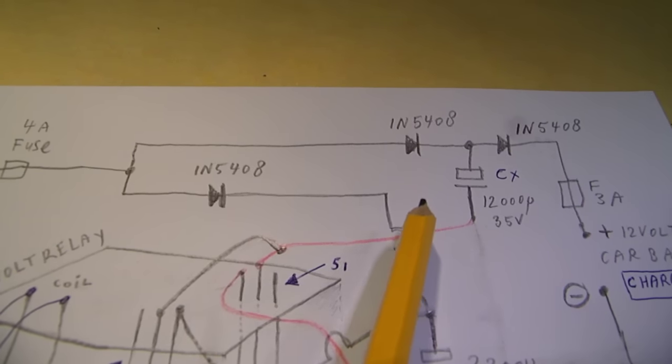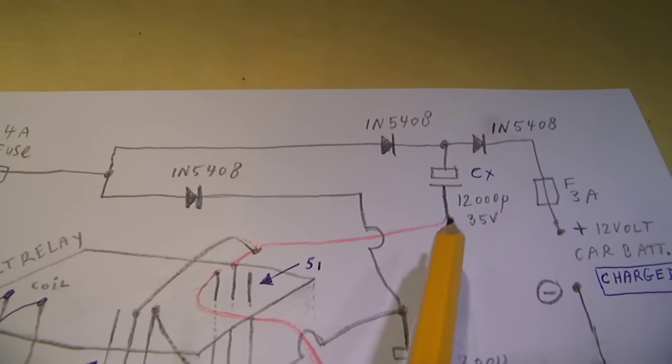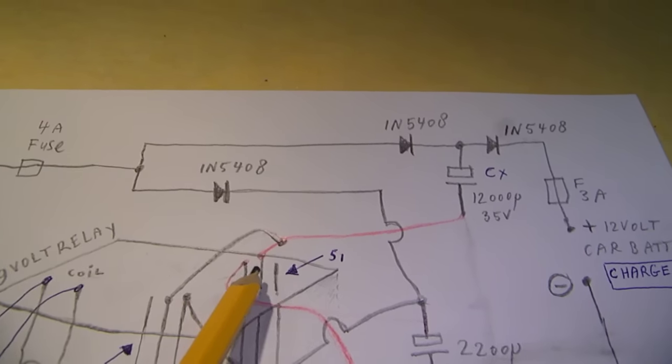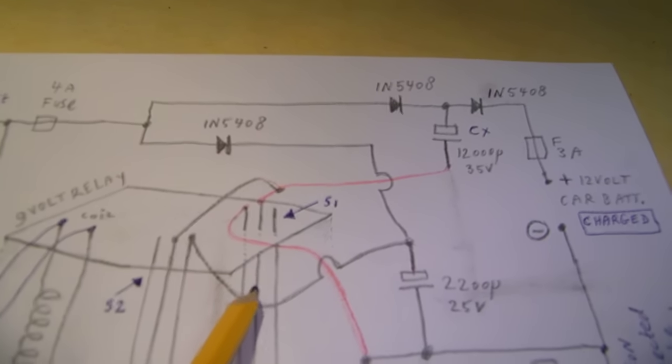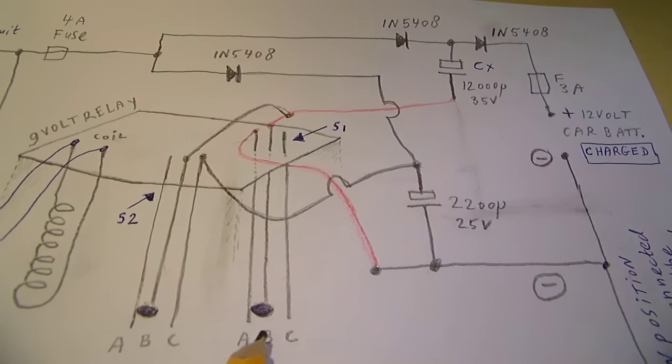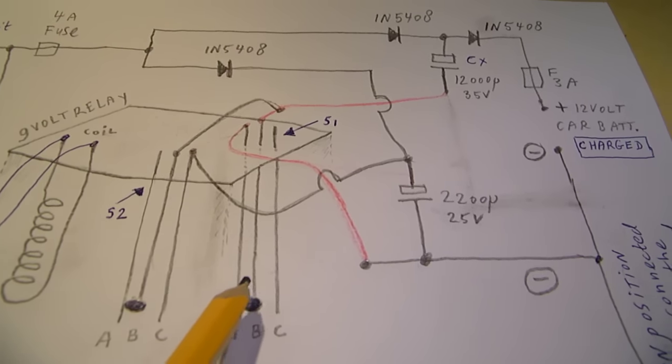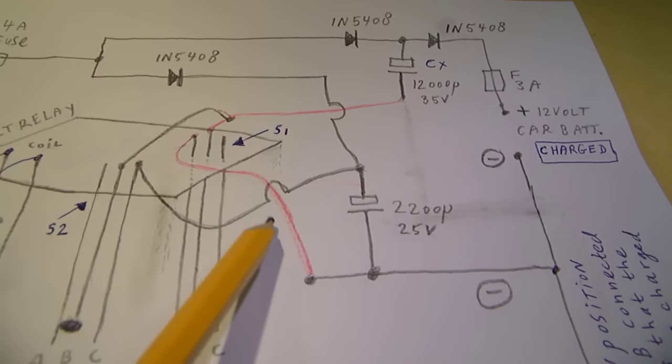So the charge current goes this way through the coil of the relay, A and B connected, and then back to minus. This one is also charged directly.